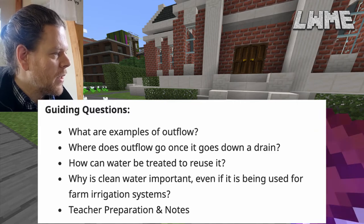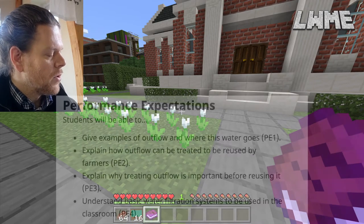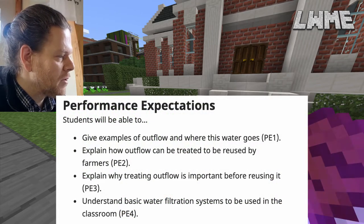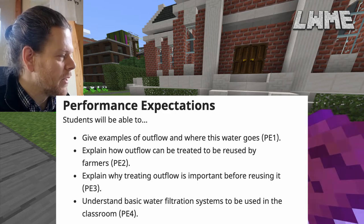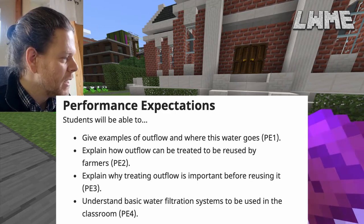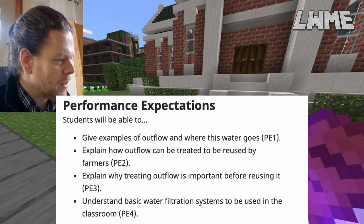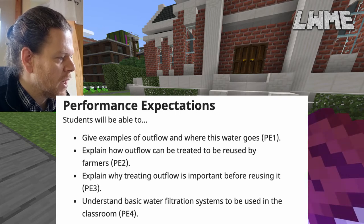If we shoot over to the website, it gives us our performance expectations. Students should be able to: give examples of outflow and where the water goes, explain how outflow can be treated and reused by farmers, explain why treating outflow is important before reusing it, and understand basic filtration systems to be used in the classroom.